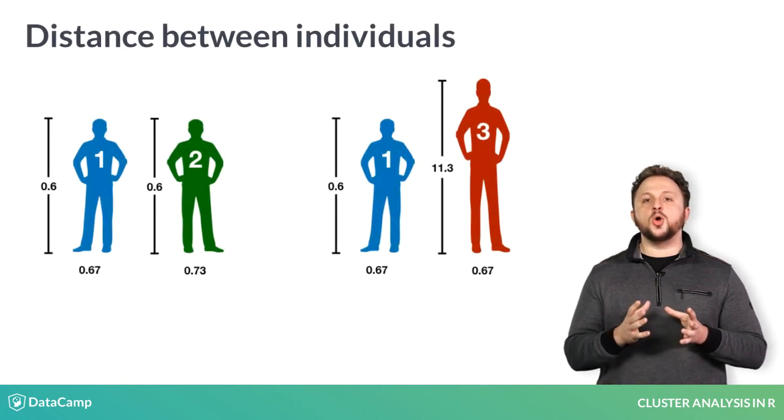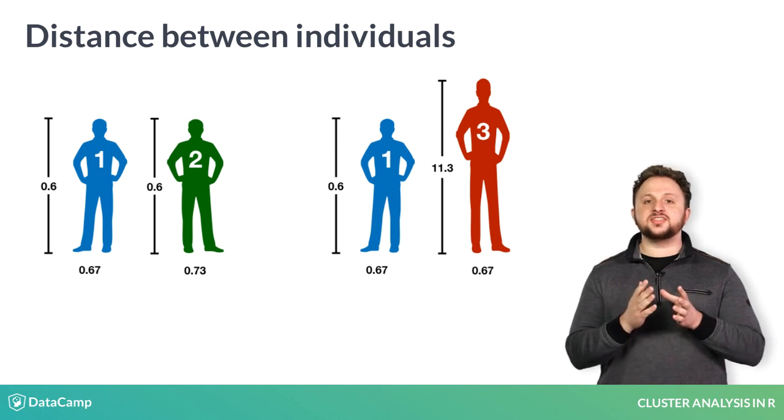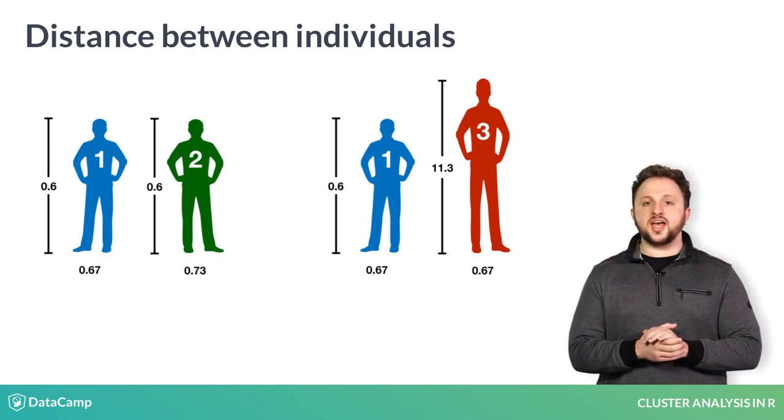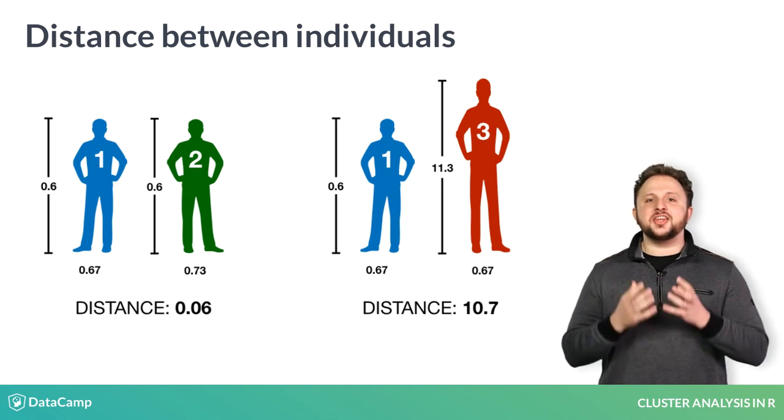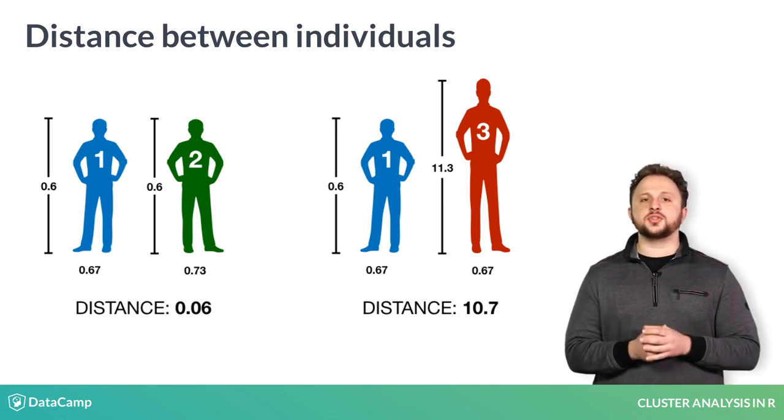Going back to the previous scenario, we can use the mean and standard deviation of the height and weight features to standardize the value for our three observations. Now, if we calculate the Euclidean distances between them, voila, the values make sense. They agree with our intuition. One and three are much less similar to one another than one and two.